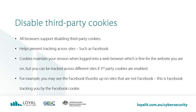Disable Third-Party Cookies. All browsers support disabling third-party cookies, which helps prevent tracking across sites, such as Facebook tracking you on sites that are not Facebook. Cookies maintain your session when logged into a web browser, which is fine for the website that you're on, but you can be tracked across different websites if third-party cookies are enabled. For example, you may see the Facebook Thumbs Up on sites that are not Facebook — this is Facebook tracking you by the Facebook cookie.